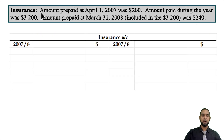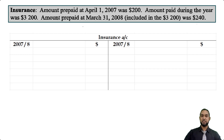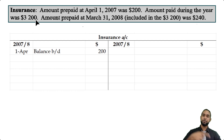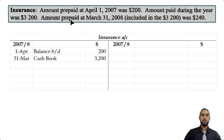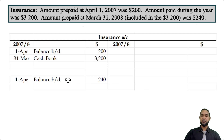Next is the insurance account. Amount prepaid at April 1st 2007 was $200. A prepaid expense is a current asset — assets have debit balances at start, so we're going to see that on the debit side. The amount paid during the year was $3,200. When you pay an expense you credit the cash book and debit the expense account. At the end, amount prepaid at March 31st was $240 — if it's still prepaid at end that balance is brought down on the debit side, but prior to that it's carried down from the credit side.